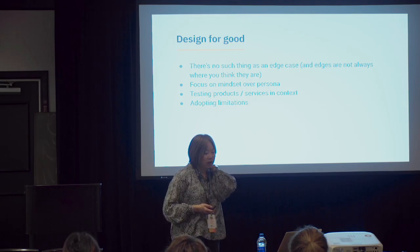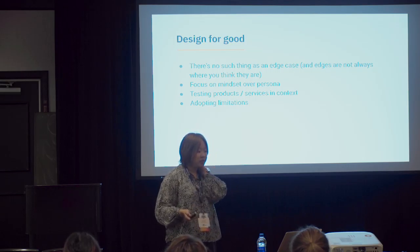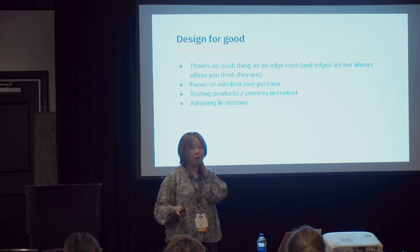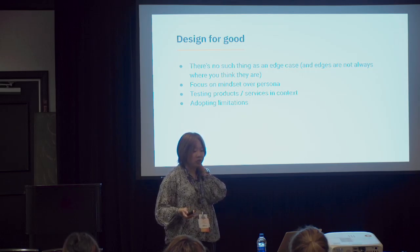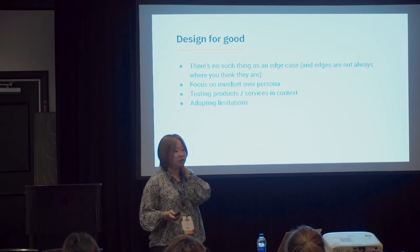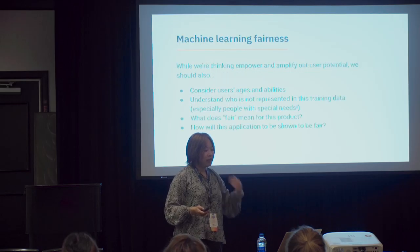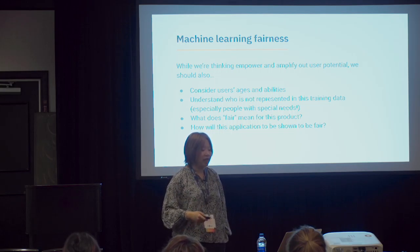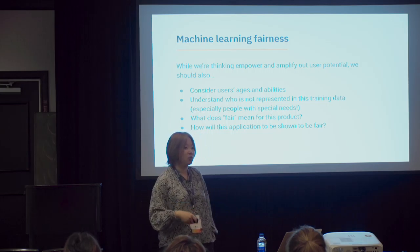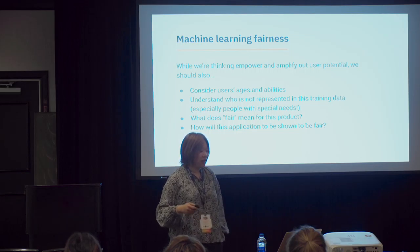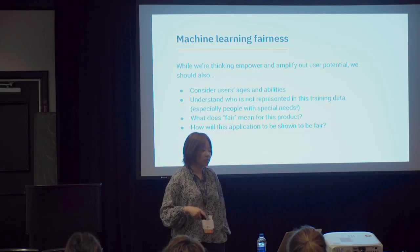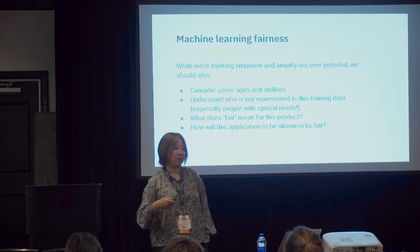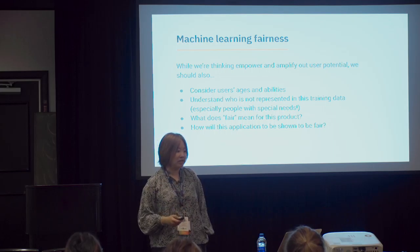There's no such thing as an edge case. Test things over and over, focus on users rather than marketing segments, and adapt to limitations like screen readers, internet speed, and device types. Pay attention to machine learning fairness — consider age, abilities, environment, and who is not represented in your dataset. Ask yourself: what does 'fair' mean for your product, and is your application presenting information in a biased way, even unconsciously?